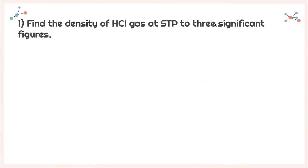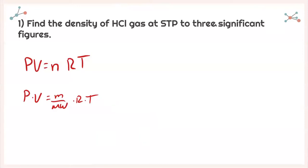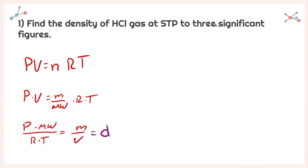I'm going to use my ideal gas law, which tells me pressure times volume is equal to the number of moles times R times temperature. The number of moles can be rewritten as mass over molecular weight. With some rearrangement, pressure times molecular weight divided by R times temperature equals mass over volume, and mass over volume is density. So density is equal to pressure times molecular weight divided by R times temperature.